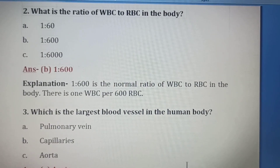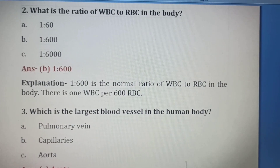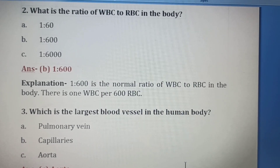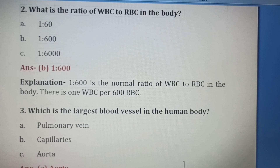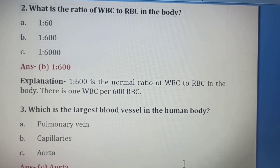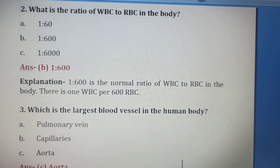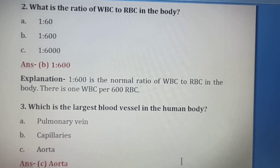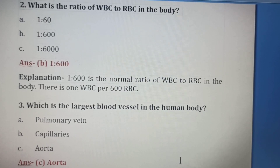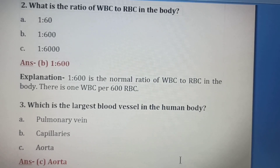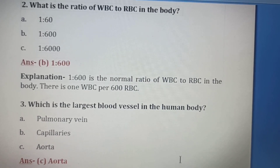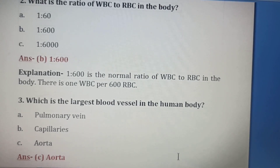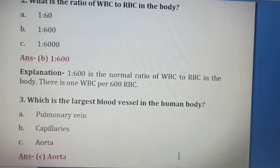Second question. What is the ratio of WBC to RBC in the body? Option A: 1 is to 60, Option B: 1 is to 600, Option C: 1 is to 6000. The correct answer is Option B: 1 is to 600. This is the normal ratio of WBC to RBC — there is 1 WBC per 600 RBC.